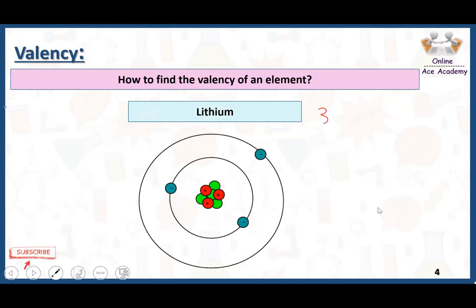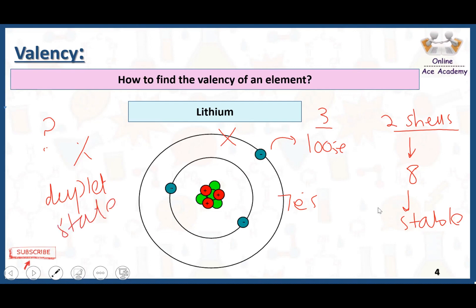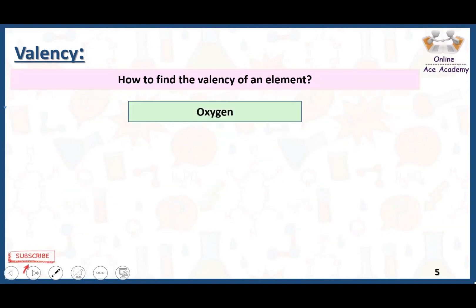To find the valency of lithium: the atomic number of lithium is 3 — in the first shell there are two electrons, in the second shell there is one electron. Since there are two shells, the outermost shell needs eight electrons to be stable, so lithium would need seven more electrons. No element will donate seven electrons to lithium, so lithium will instead lose its one electron. After losing that electron, only the first shell remains with two electrons, satisfying the duplet state. Therefore, the valency of lithium is one.